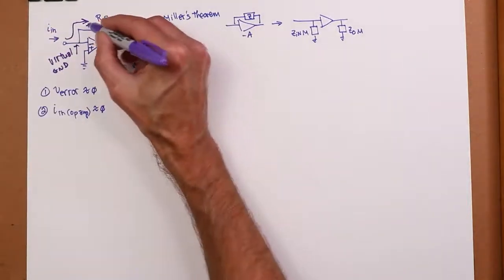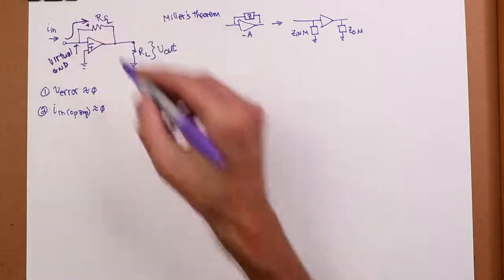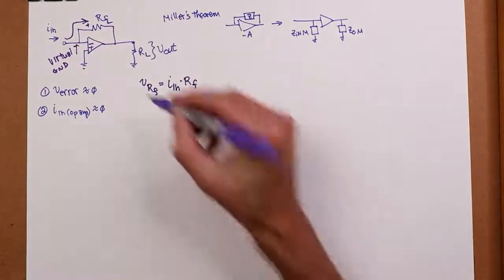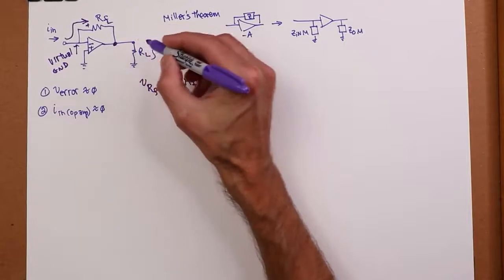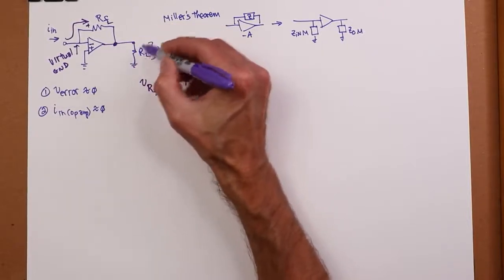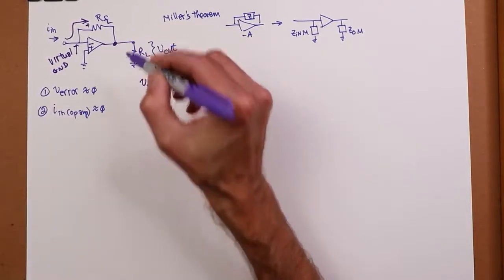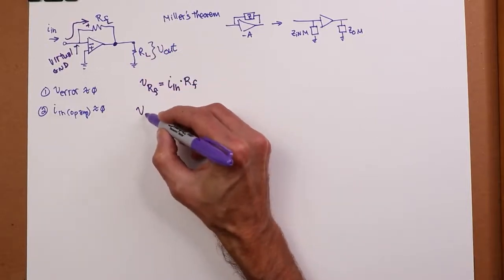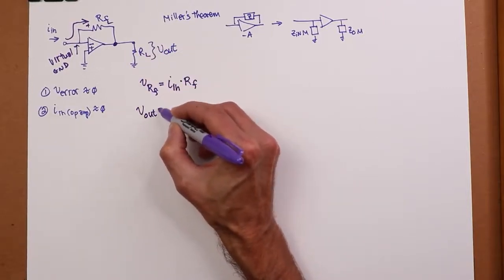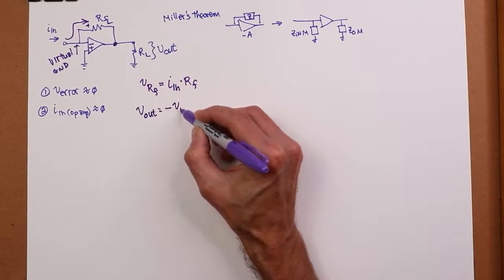So a positive input current like this, we get a polarity like this at the output, or excuse me, across RF. Now, notice this end of RF is at the output node, right? Here's RL. It turns out that Vload, or Vout, is equal to the negative of VRF.